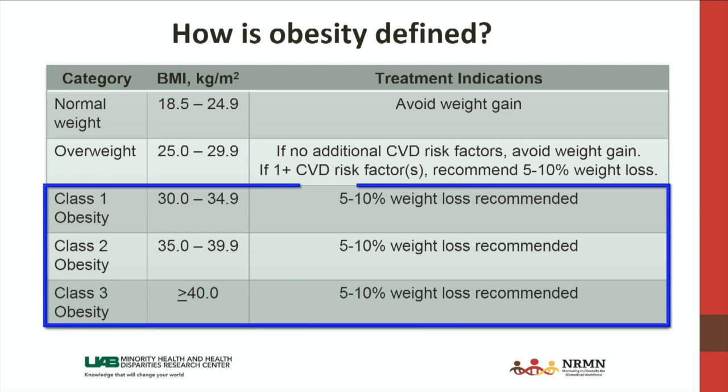The last three categories are all in the obesity range. There are three classes of obesity — class 1, class 2, and class 3 — which are just levels of severity. Anyone with a BMI greater than 30 would be in one of these three ranges, with a BMI over 40 being the most severe level, class 3 obesity. For all of those, weight loss of 5 to 10 percent is recommended.